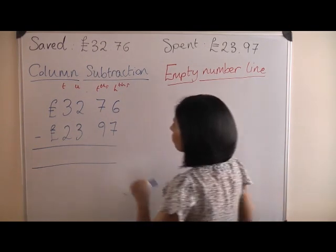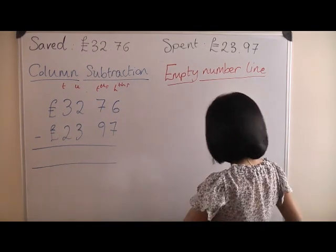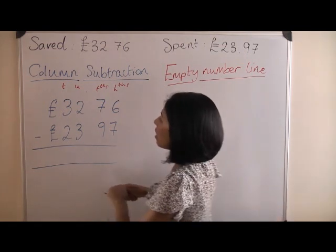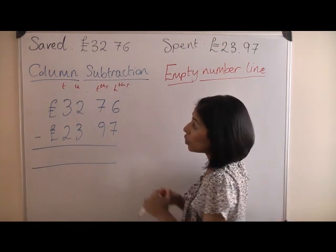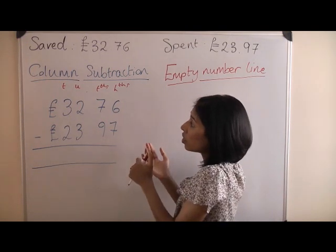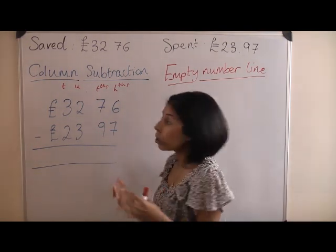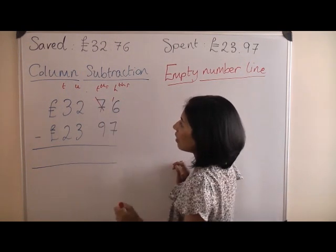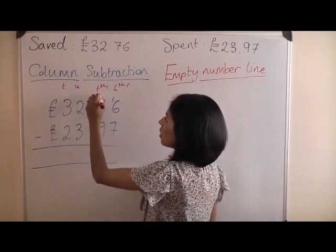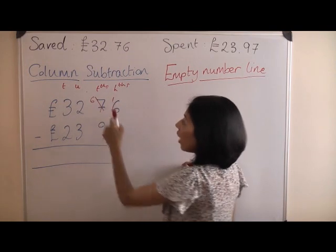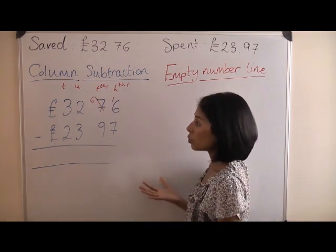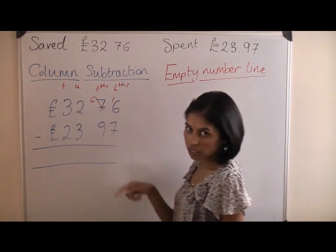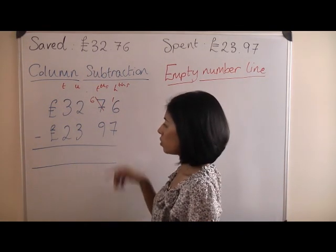So let's start. Six take away seven. Now you can't do that, because six is smaller than seven, so you need to borrow from the tens. So you borrow a ten. That ten now becomes a six. Now you can do it. Sixteen take away seven is possible. Let's count up from the seven till we get to sixteen to figure out what the difference is.